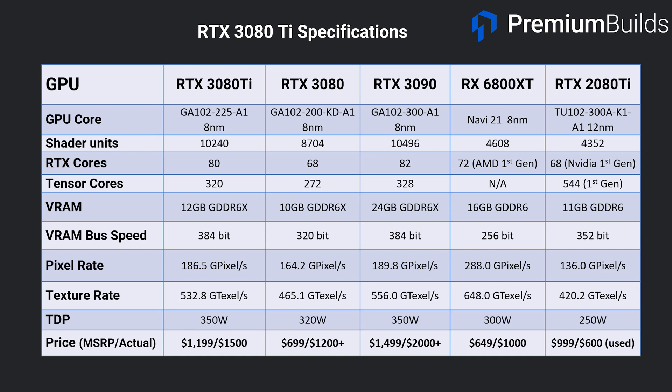The core itself loses just 256 of over 10,000 shader units versus the 3090, and 8 Tensor cores and 2 RTX cores. This is a near identical specification to the 3090, which indicates that it should perform very similarly too. We can't compare shader units across to the AMD card or the last generation RTX 2080 Ti, as they're different architectures. The same goes for ray tracing cores.